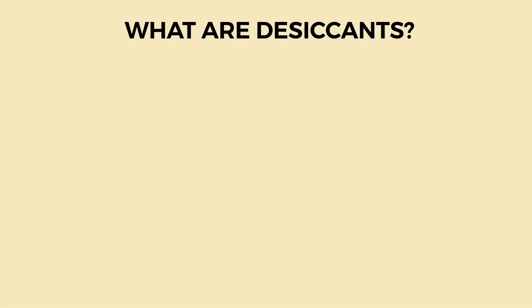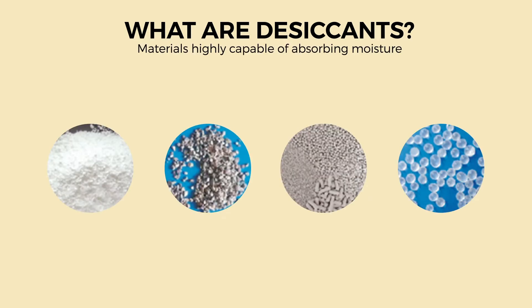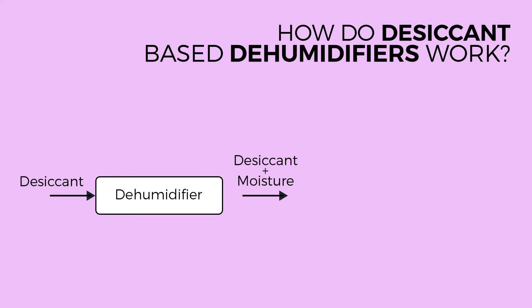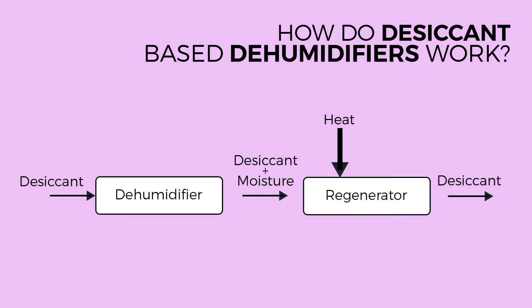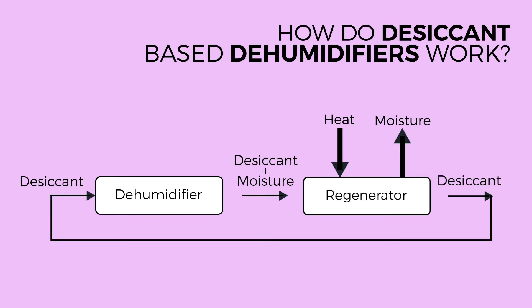Before we dive deep into the use of liquid desiccants, let us zoom out and understand what exactly this technology is. Desiccants are materials that are so hydrophilic that they are able to absorb moisture from air. These desiccant materials are used to dehumidify air, but once they have absorbed moisture from a system or from a room, the absorbed moisture needs to be removed. This is where solar heat, waste industrial heat, or heat from any other source would be used to drive the moisture out of the desiccant and into the environment. This is called regeneration, which dries the desiccant again so that it can be used for dehumidification, and the process can be repeated.